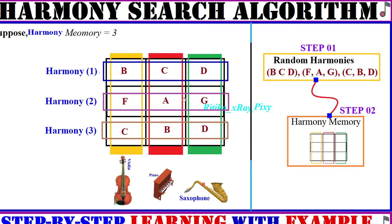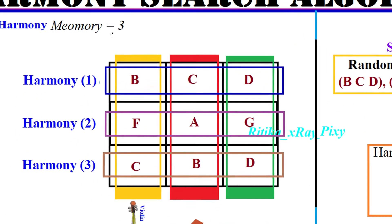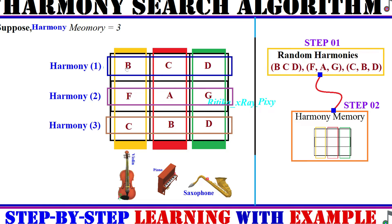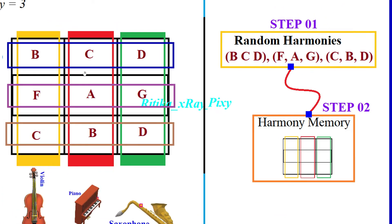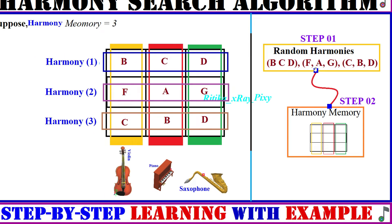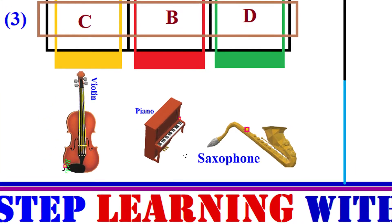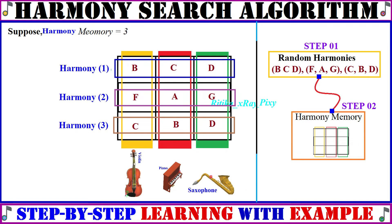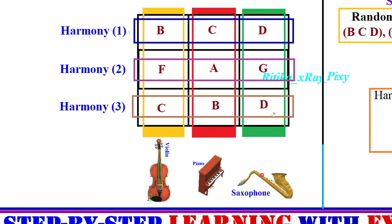In the population we have 26 alphabets from A to Z. We will generate harmonies randomly in the first step. With a harmony memory size of three, we initialize: first harmony B C D, second harmony F A G, third harmony C B D. We have three musical instruments generating sounds: first instrument sounds B F C, second instrument sounds C A B, third instrument sounds D G D.